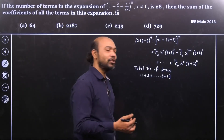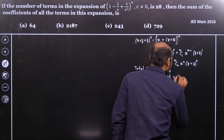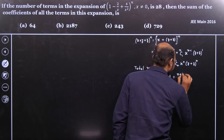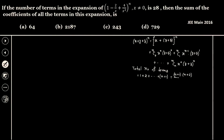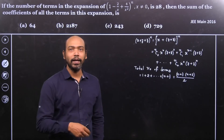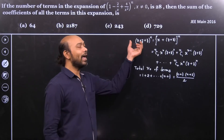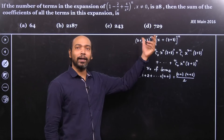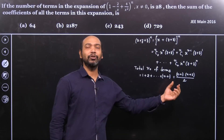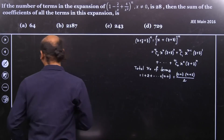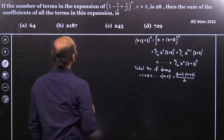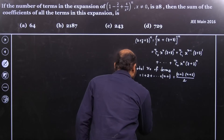This is an AP series — the sum of the first n plus 1 natural numbers. So the sum is written as n plus 1 multiplied by n plus 2 divided by 2. This is the concept you need to remember to solve this problem. Always remember that if we have x plus y plus z whole to the power n, the number of terms is n plus 1 times n plus 2 divided by 2.